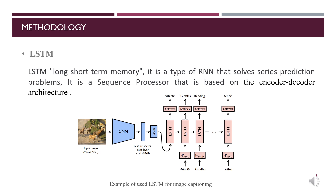The sequence processor and feature extractor both generate a fixed-length vector, after which the decoder merges this vector using an addition operation and then passes it to a dense layer. Then, with the final dense output layer, it makes a prediction of the next word in the sequence based on a softmax prediction on the entire output vocabulary.